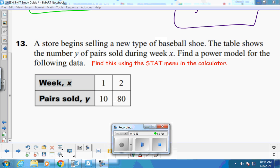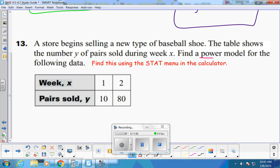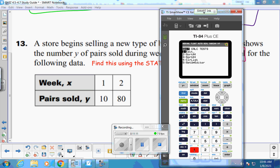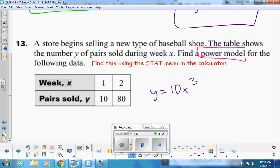This is our last stat world problem. You do have to read the instructions in case they have any quirks here. We are using a power model. So it will be choice A on the list. Can you go to stat, calculate? Stat, edit. Our L1s are 1 and 2. And then your L2s are 10 and 80. Stat, calculate, alpha A. Enter, enter, enter, enter, enter, enter. Did you get A is 10 and B is 3? So my formula looks like this. Y equals 10, X to the third. The cubic.